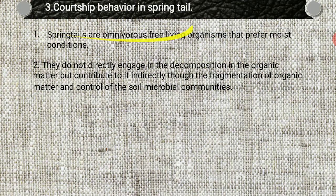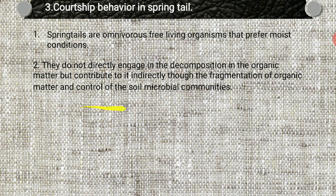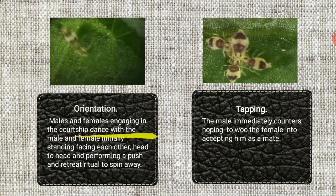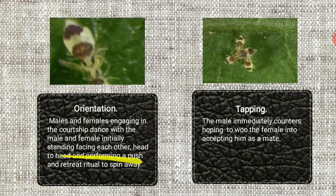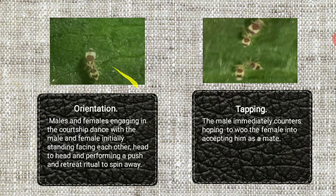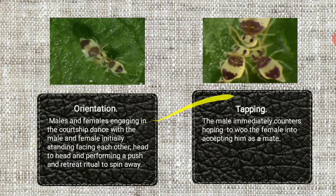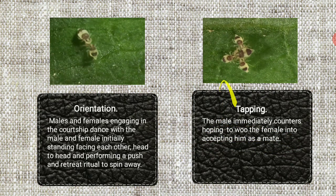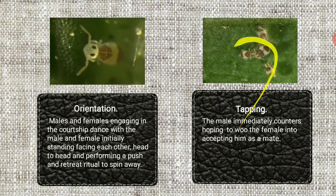Next we move on to the courtship behavior in springtails. Springtails are omnivorous, free-living organisms that prefer moist conditions. They do not directly engage in the decomposition of organic matter but contribute indirectly through fragmentation of organic matter and controlling soil microbial communities. It involves the following courtship behavioral steps. First one is orientation: the male and female engage in a courtship dance, with the male and female initially standing facing each other head to head, performing a push-and-retreat ritual. Here observe how the male pushes the female head to head. Second one is tapping: the male immediately encounters the female, hoping to woo her into accepting him as a mate, and many males can try tapping the female.